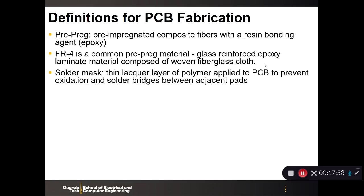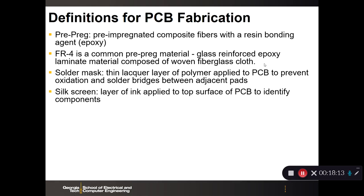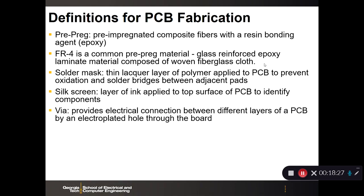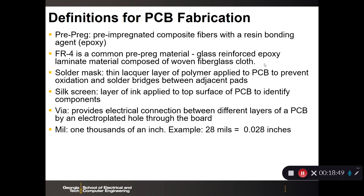The solder mask is a thin lacquer of polymer applied to the PCB to prevent oxidation and solder bridges between adjacent pads. The silk screen is a layer of ink applied to the top surface of a PCB to identify components and other information. A via provides an electrical connection between different layers of the PCB via an electroplated hole through the board.